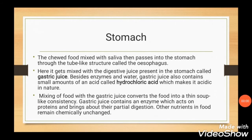Stomach. The chewed food mixed with saliva is then passed down to the stomach through the esophagus. When food reaches the stomach, it gets mixed with gastric juice, a secretion of the stomach. Gastric juice contains enzymes and water, and also hydrochloric acid which makes its nature acidic. On mixing food with gastric juice, it gives a thin soup-like consistency. Gastric juice contains an enzyme which partially digests the proteins, while other nutrients remain unchanged.